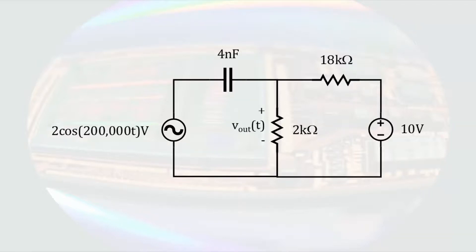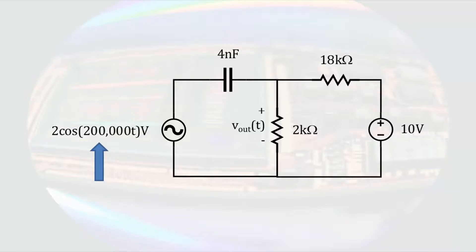In this circuit, we would like to know the time-dependent voltage across the 2 kilohm resistor. Since the capacitor in the circuit will look different to the two different types of sources, we will have to use superposition on the circuit.